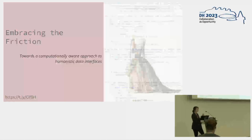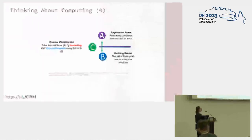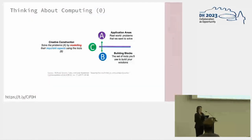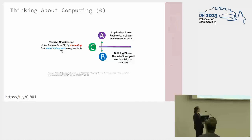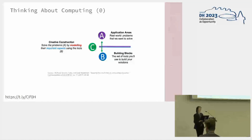I want to start with something similar to what I'm doing now, which is computing science education. The computing curriculum for K-12 in Scotland is built around this ABC model of what it means to do computing. It divides into three sections: A for application areas — problem spaces; B for building blocks — the computational primitives you use to build solutions; and C for creative construction, which is crucially the translation of human understandings of structure and process to machine representations of structure and process.